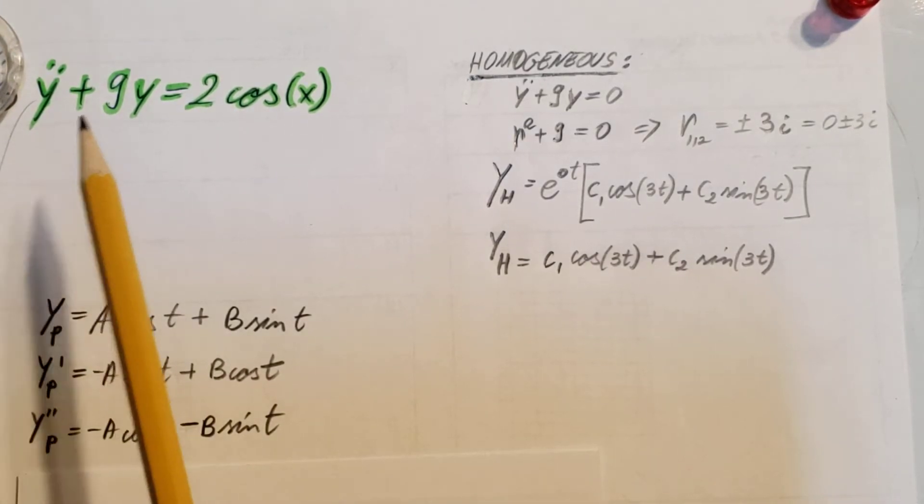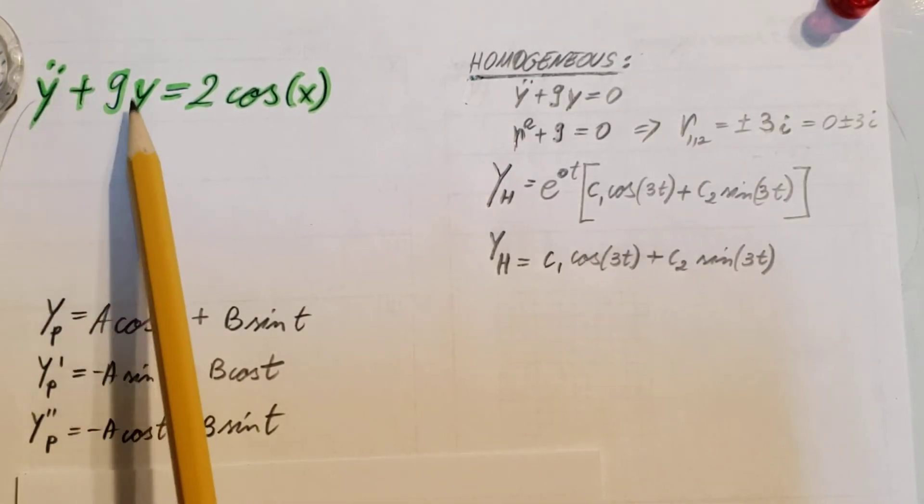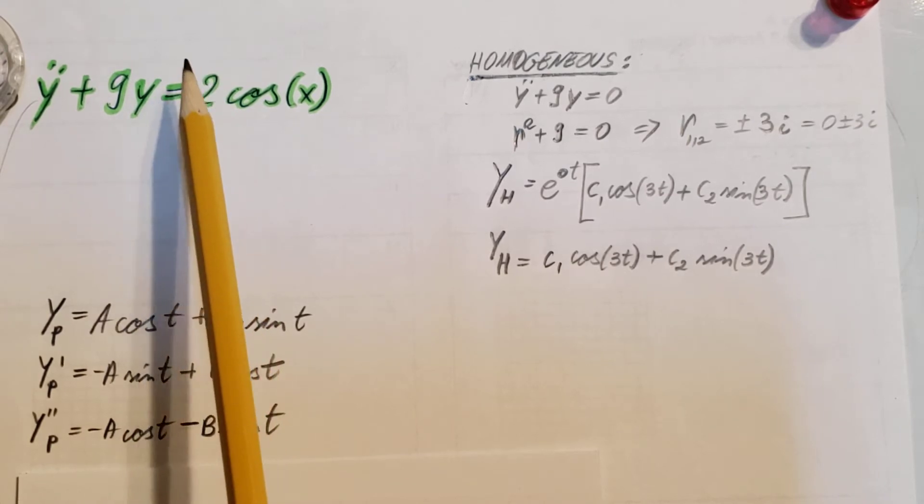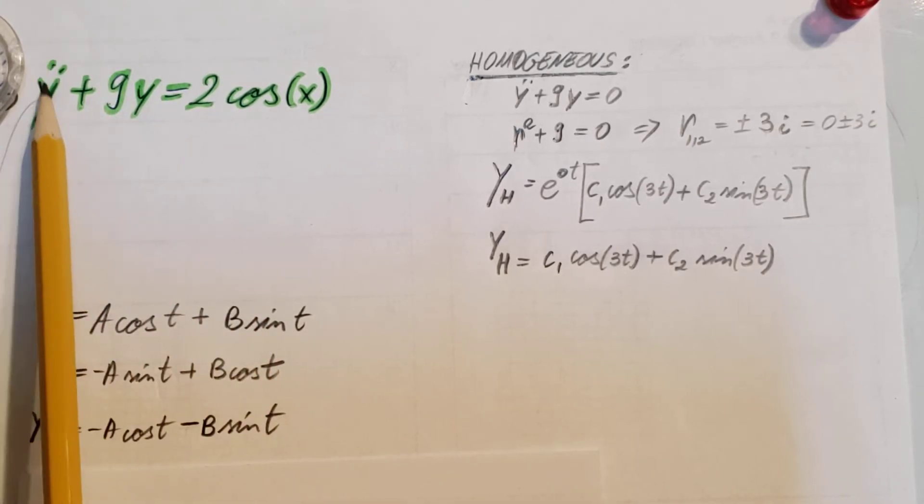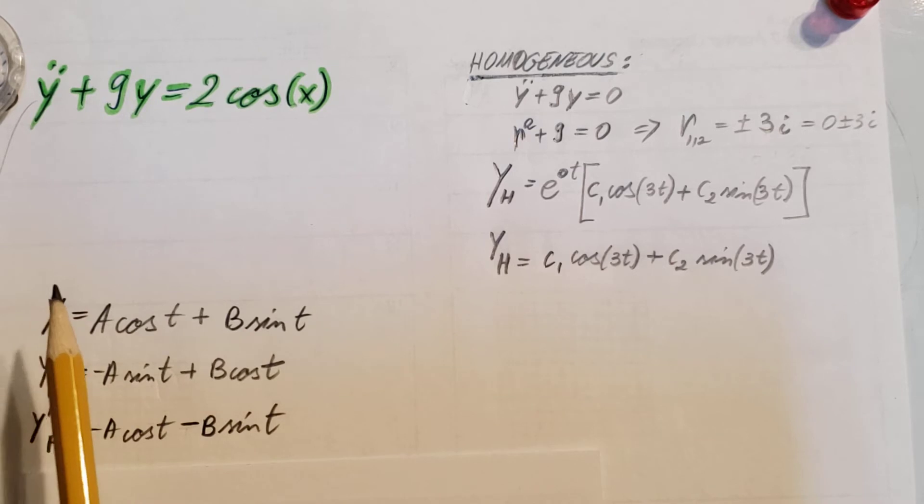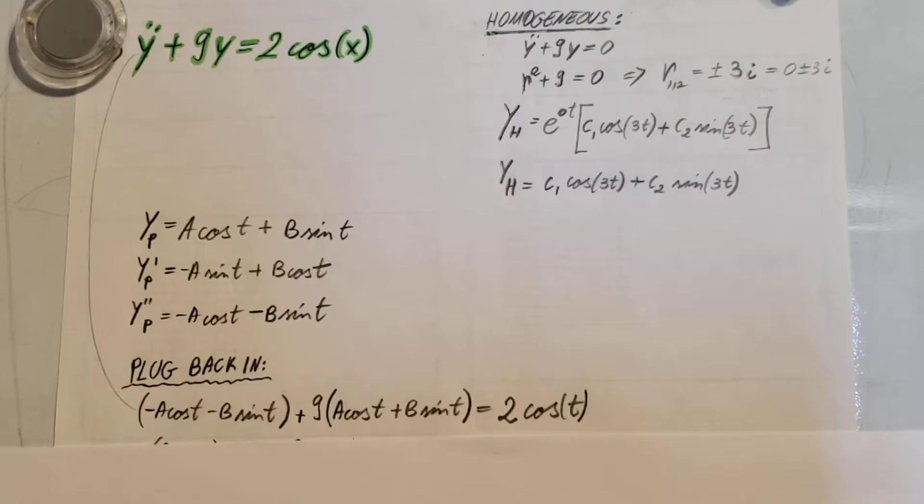For the next step, we're gonna have to plug back into our ODE, but for that we need to find our y double prime. Yp is what we guessed, we take a derivative and another derivative, and now we have our y double prime.